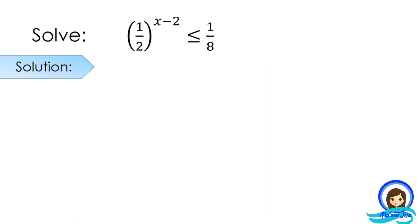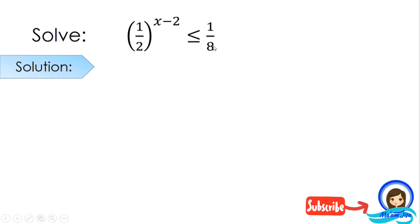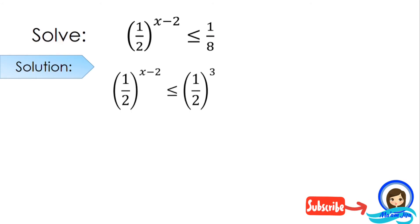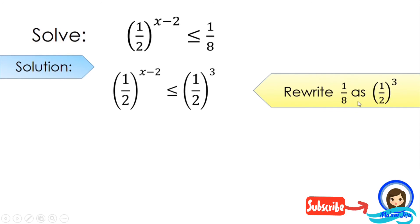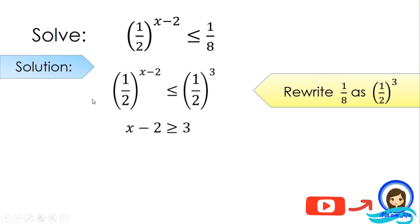Let's proceed with the third example. This time, the base is less than 1. We have 1/2 on one side and 1/8 on the other. To solve this, we rewrite 1/8 as (1/2) cubed, because (1/2) cubed is 1/8. Now they have the same base. We equate their exponents: x minus 2 greater than or equal to 3.